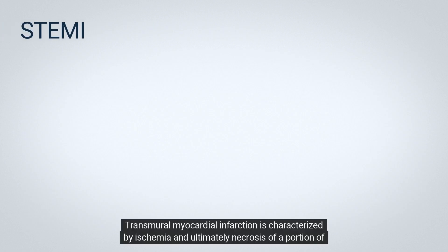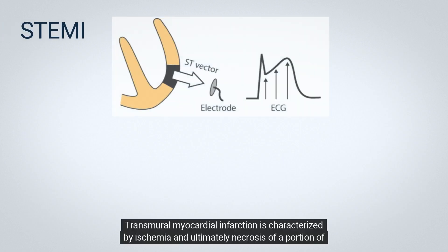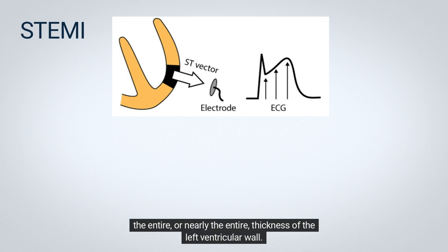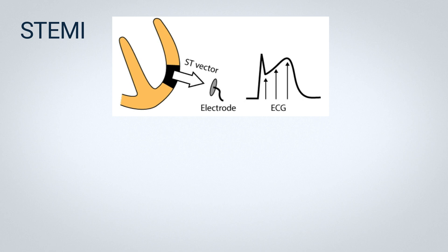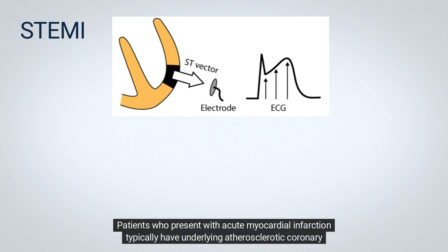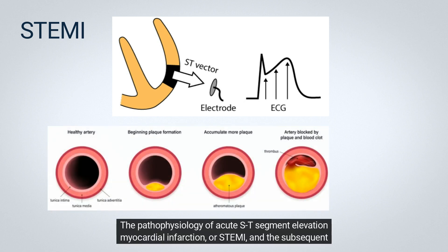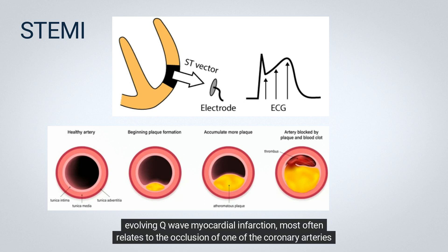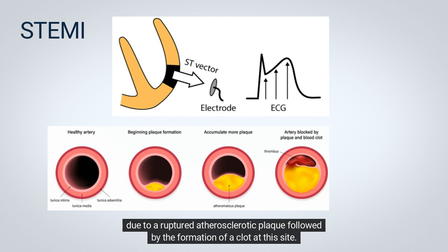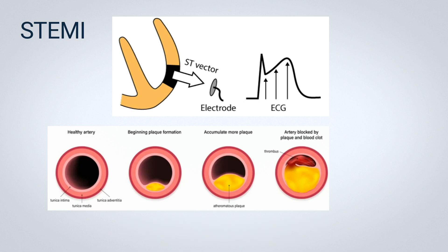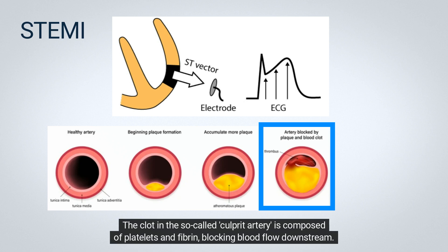Transmural myocardial infarction is characterized by ischemia and ultimately necrosis of a portion of the entire, or nearly the entire, thickness of the left ventricular wall. Patients who present with acute myocardial infarction typically have underlying atherosclerotic coronary artery disease. The pathophysiology of acute ST-segment elevation myocardial infarction, or STEMI, and the subsequent evolving Q-wave myocardial infarction most often relates to the occlusion of one of the coronary arteries due to a ruptured atherosclerotic plaque, followed by the formation of a clot at this site. The clot in the so-called culprit artery is composed of platelets and fibrin, blocking blood flow downstream.